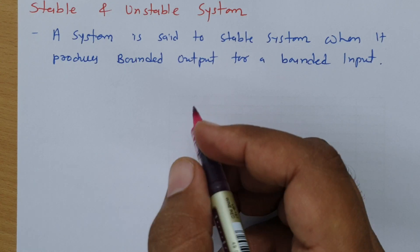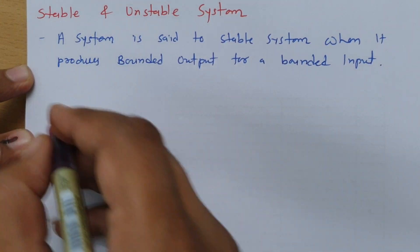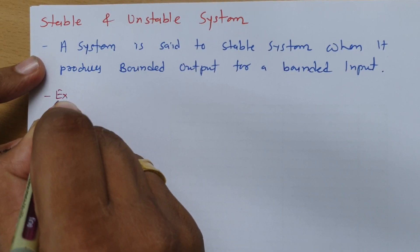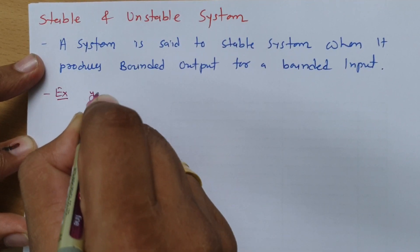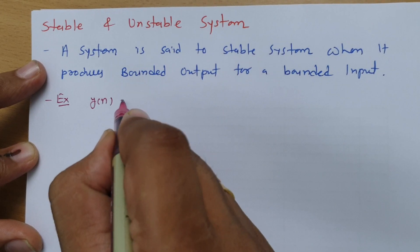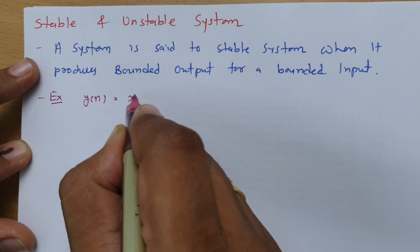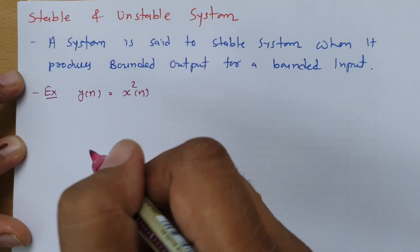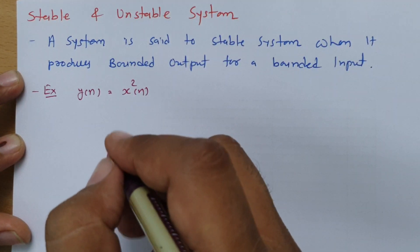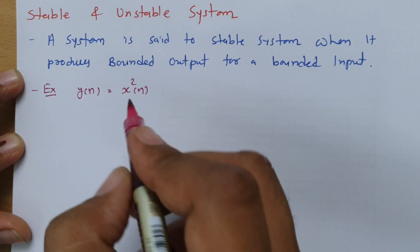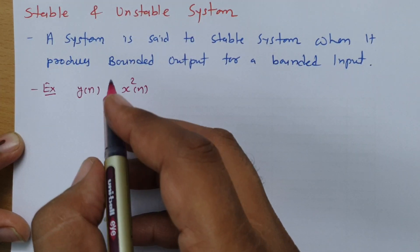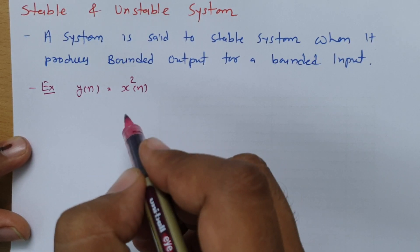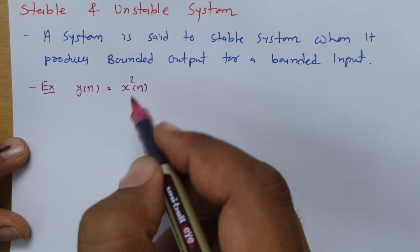Let us understand this with an example so it will be more clear. If you have been given an input x[n] and output y[n], and the relation is y[n] = x²[n], then we need to give a bounded input first. Every time when checking this stability condition, you will have to give step input — that is the standard bounded input.